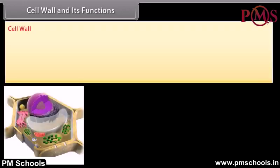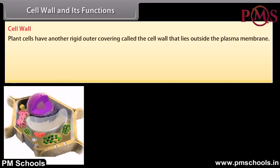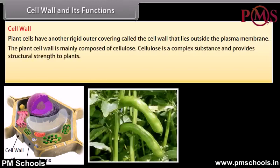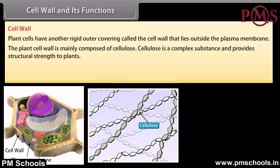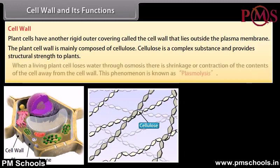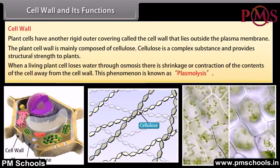Plant cells have another rigid outer covering called the cell wall, which lies outside the plasma membrane. The plant cell wall is mainly composed of cellulose, a complex substance that provides structural strength to plants. When a living plant cell loses water through osmosis, there is shrinkage or contraction of the contents of the cell away from the cell wall. This phenomenon is known as plasmolysis.